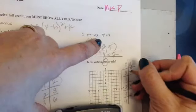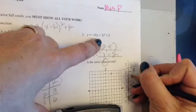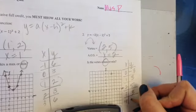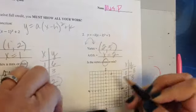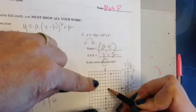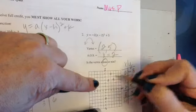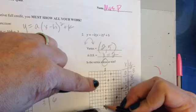And in my table function, I can fill in 0 and negative 3, 1 and 3. Come down here to 3 and 3, and 4 and negative 3. So, 0, negative 3, 1, 3. I have my vertex at 2, 5, 3, 3, and 4, negative 3.